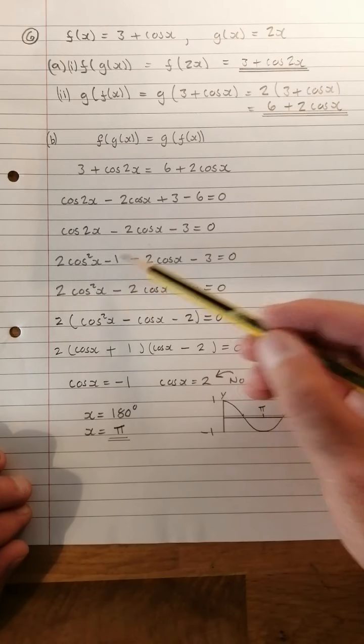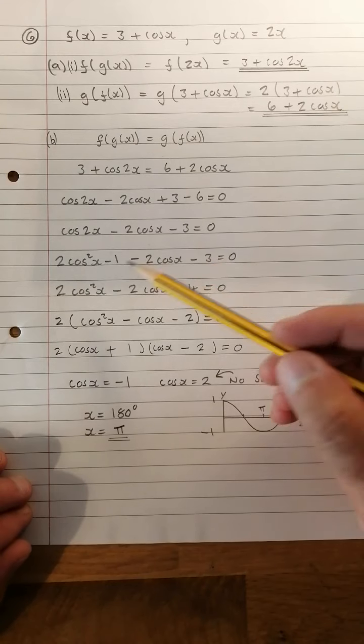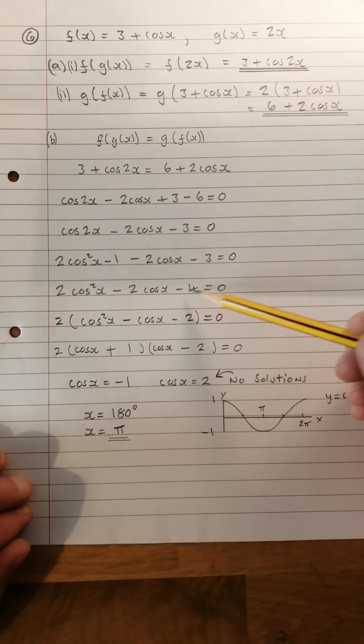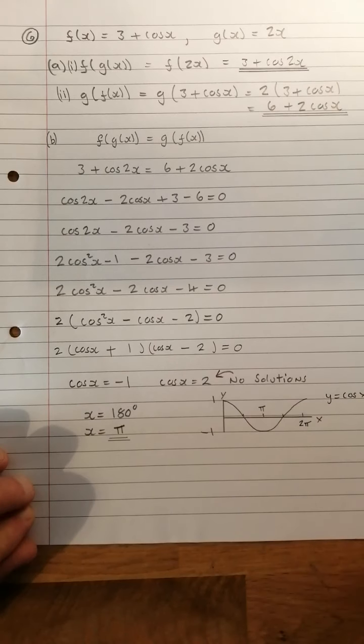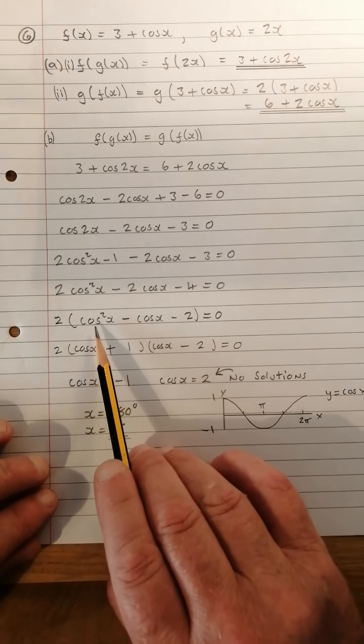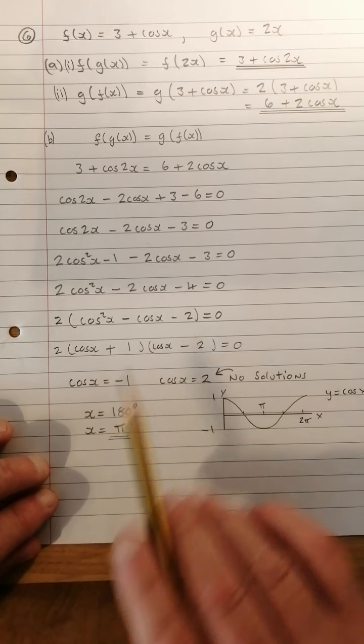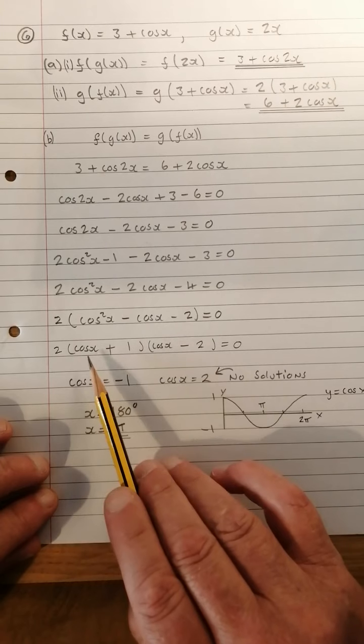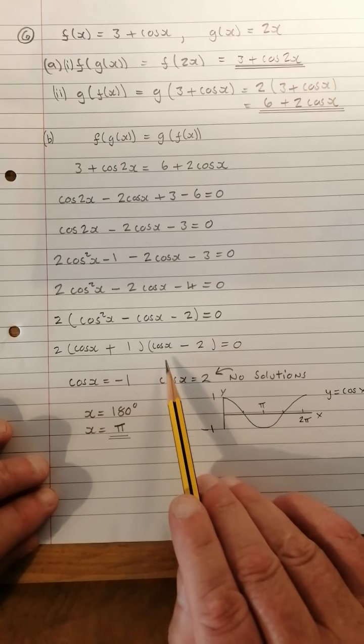There it is there. Tidy it up, we have 2 cos squared x minus 2 cos x minus 4 equals 0. Take 2 as a common factor and we have 2 times cos squared x minus cos x minus 2. We will now factorize this to give you cos x plus 1 times cos x minus 2.